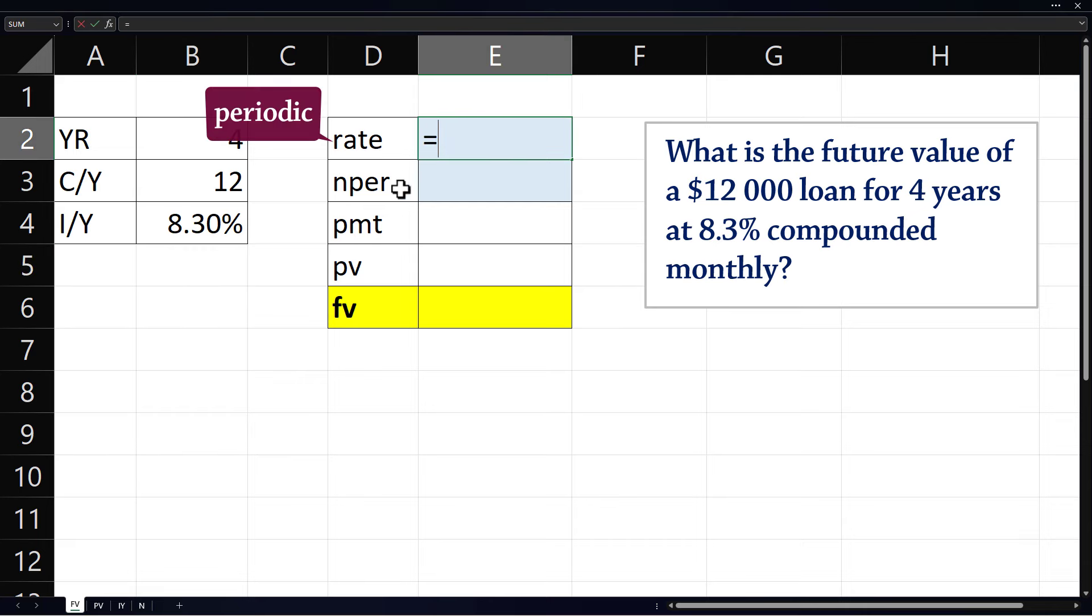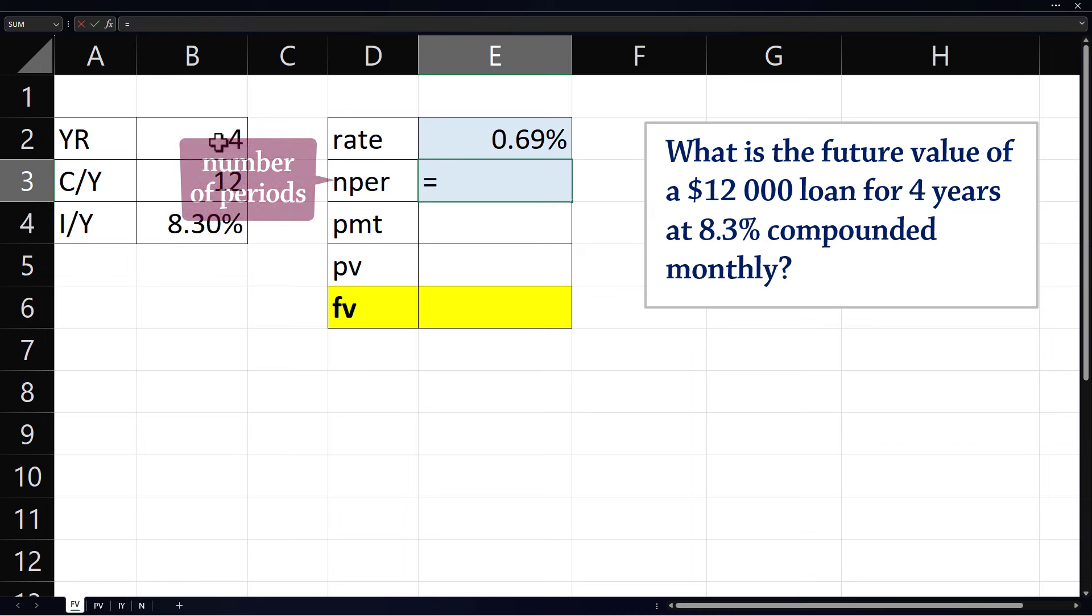Rate here is the periodic rate, which is the nominal rate divided by the compounding frequency per year. nper is the number of periods, which would be the number of years times the number of compounding periods per year. These two shaded cells do not need to be changed later since they contain formulas.